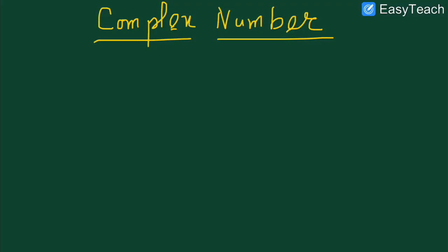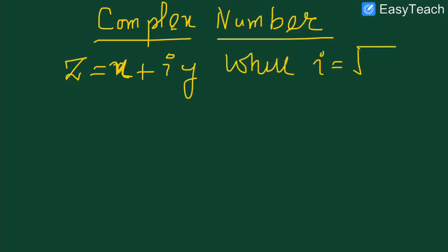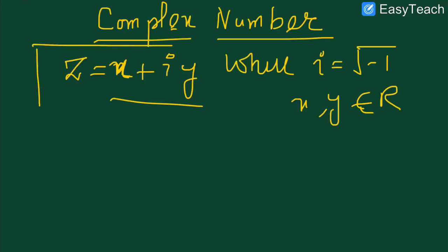You may have heard in your previous classes what a complex number is. If not, today we will discuss what a complex number actually is. The definition: any complex number which can be written in the form of x plus iota y is called a complex number, where iota is equal to the square root of minus one, and x, y belong to R — that means x and y are real numbers.